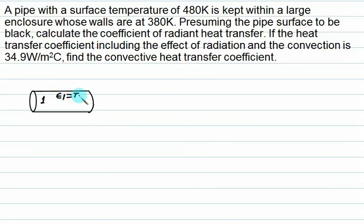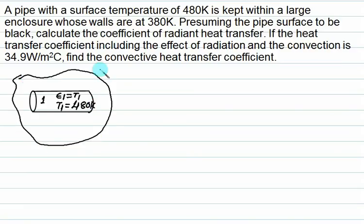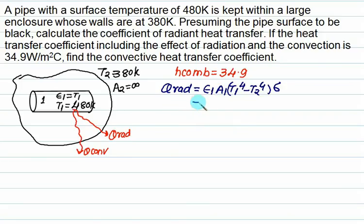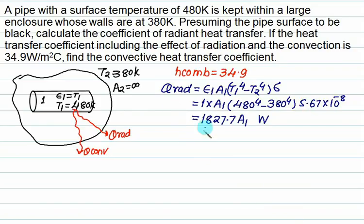For a black body, epsilon_1 equals 1. T1 is 480 K, T2 is 380 K, and A2 is very large. Heat transfer by radiation equals epsilon_1 × A1 × sigma × (T1^4 minus T2^4). With sigma = 5.67 × 10^-8, epsilon_1 = 1, T1 = 480 K, and T2 = 380 K, the radiation heat transfer equals 1827.7·A1 W.